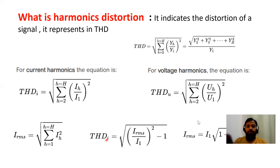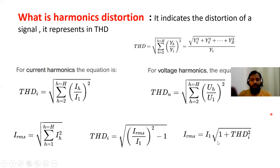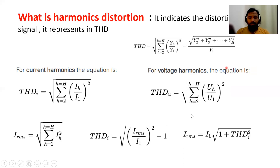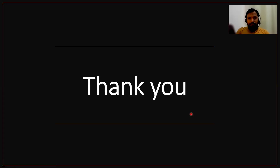The RMS current formula is: I_rms = I1 × √(1 + THD²). And the THD in terms of current is: THD_I = √((I_rms / I1)² − 1). These formulas help find the harmonic distortion. Thanks for watching. In the next video, the effects of harmonics will be explained. Stay tuned — good day!